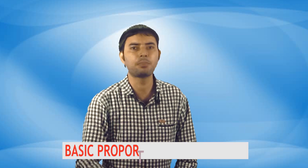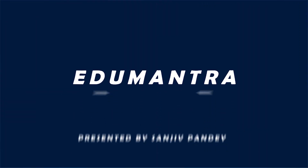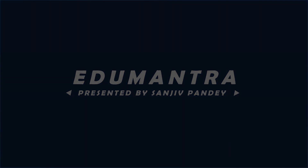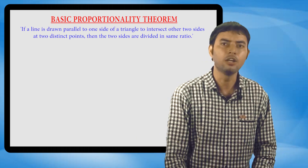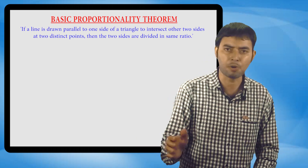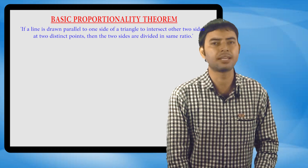Hello friends, we are going to learn about basic proportionality theorems in the chapter Triangle. If a line is drawn parallel to one side of a triangle to intersect the other two sides at two distinct points, then the other two sides are divided in the same ratio.